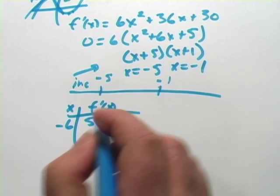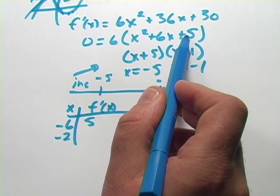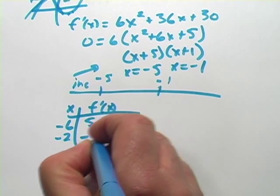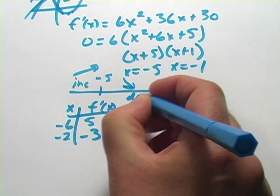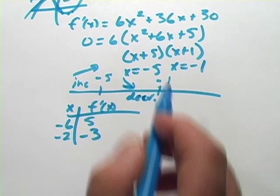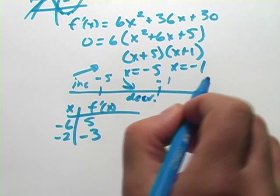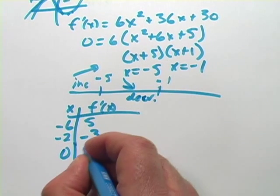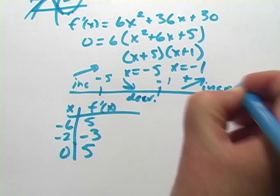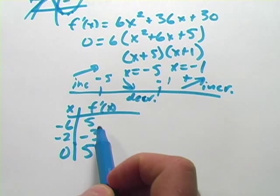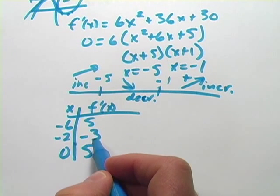Let's find a point in here. I'll choose negative 2. So we've got 4 minus 12 plus 5, that's going to be a negative 3. So the function is decreasing here, and that definitely is a relative max. And then let's choose a point in the next region. I'm going to choose 0, and that gives you a value of 5 again, and that's positive, so it's increasing. So we find the zeros of the derivative, and then we test these regions. Positive value means increasing, negative value means decreasing.